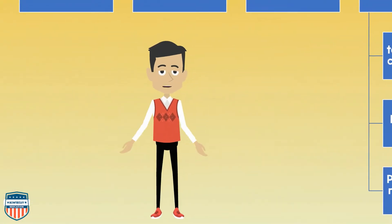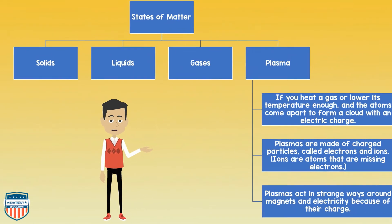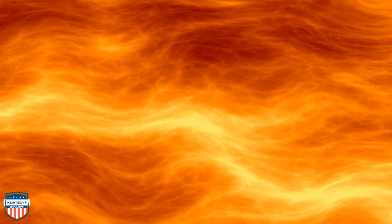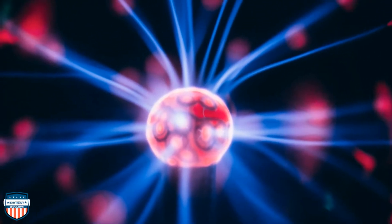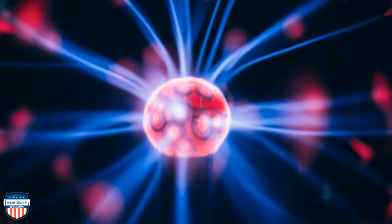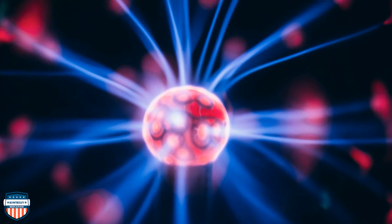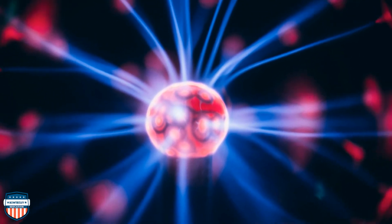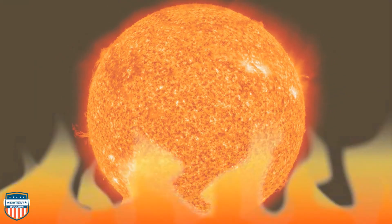Lastly, let's discuss plasma. If you heat a gas or lower its temperature enough, the atoms come apart to form a cloud with an electric charge. Plasma is made of charged particles called electrons and ions. Ions are atoms that are missing electrons. Plasma acts in strange ways around magnets and electricity because of their charge.